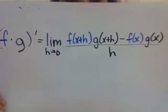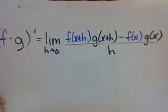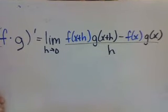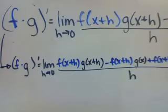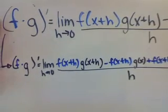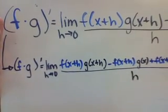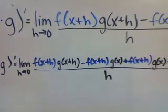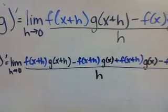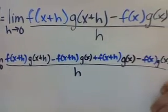However, we will need to make a few adjustments in order for this to help us understand how the product rule works. In order to split up the derivative in a way that will help us understand the product rule, we need to both add in and subtract out the expression f of x plus h times g of x to the numerator.